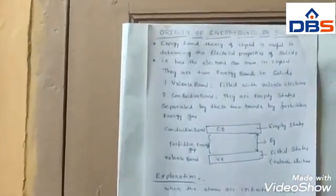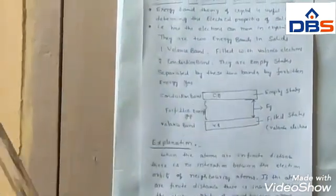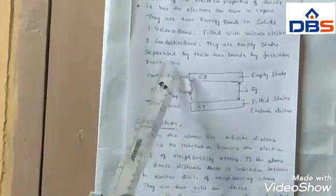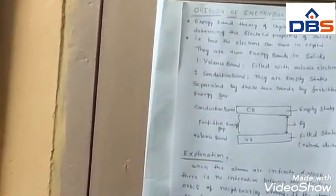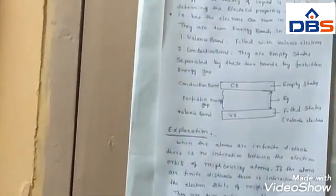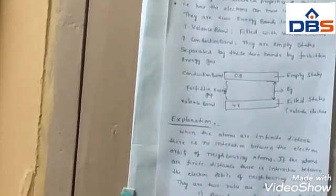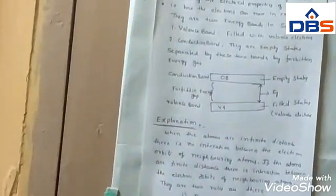For these three solids, we have two energy bands. One of the bands is nothing but the valence band; another band is nothing but the conduction band. What is the valence band? The valence band is nothing but the maximum energy level filled with valence electrons. The valence electrons are nothing but the electrons in the outermost orbit of an electronic configuration.